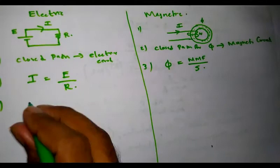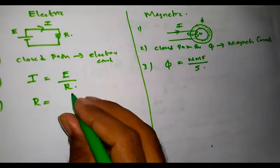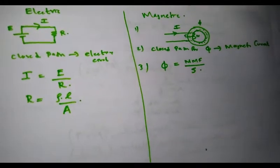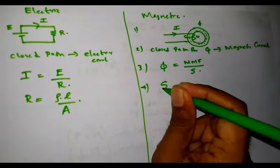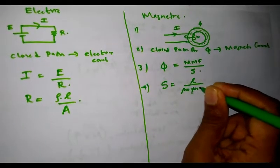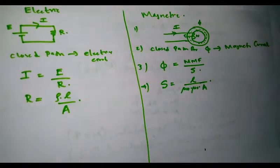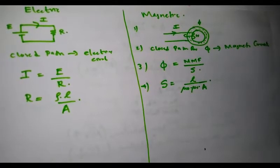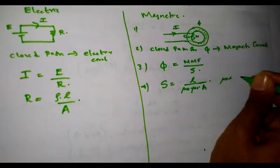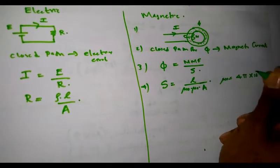Also, based on the physical parameters, resistance R is equal to rho times L divided by A, where rho is resistivity, L is the length, and A is the area of cross-section. Similarly, in a magnetic circuit, reluctance S is equal to L divided by mu-0 times mu-R times A, where L is the length, A is the area of cross-section, mu-0 is the absolute permeability of free space, mu-R is the relative permeability, and the value of mu-0 is 4π × 10⁻⁷.